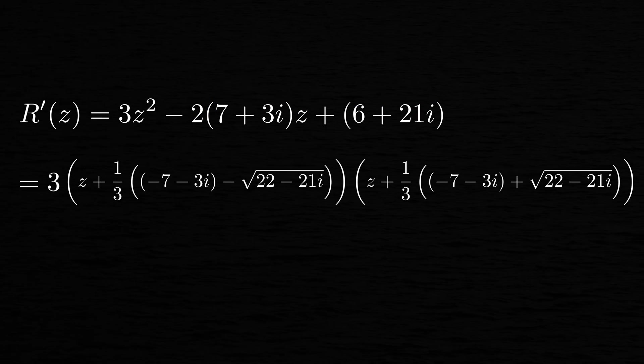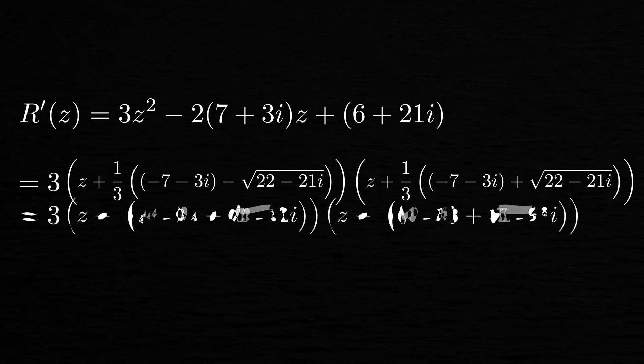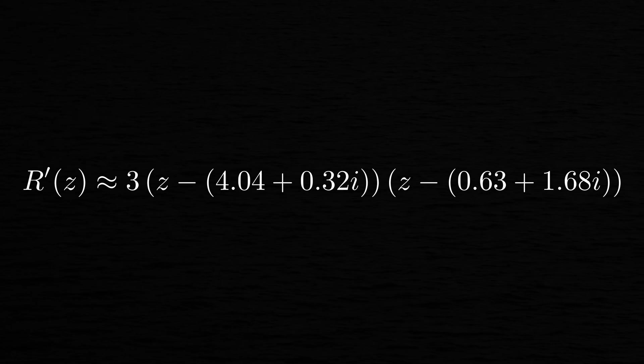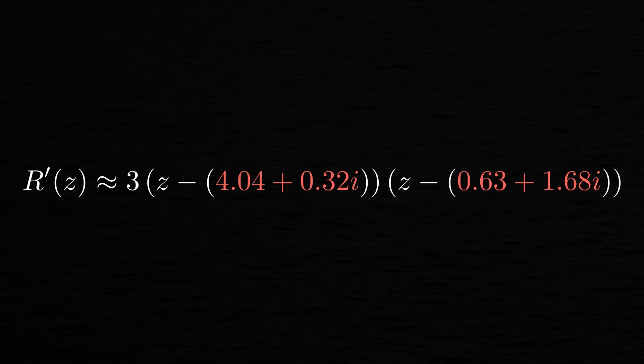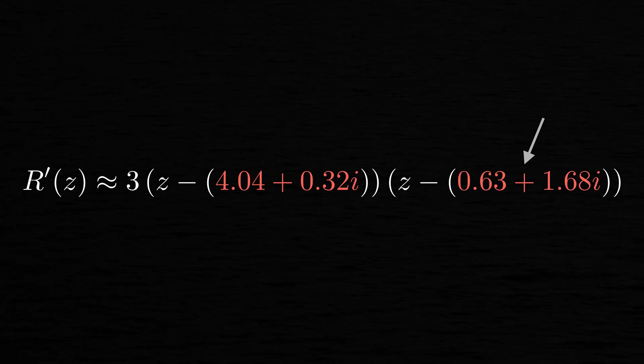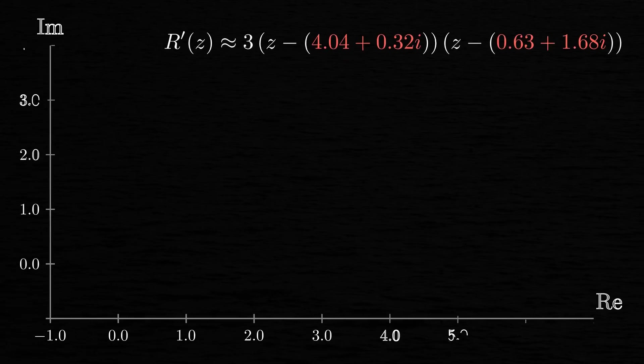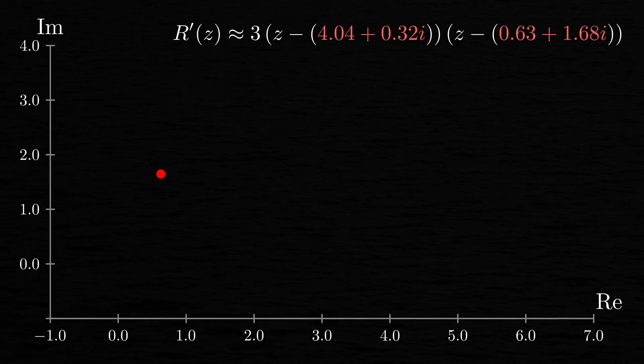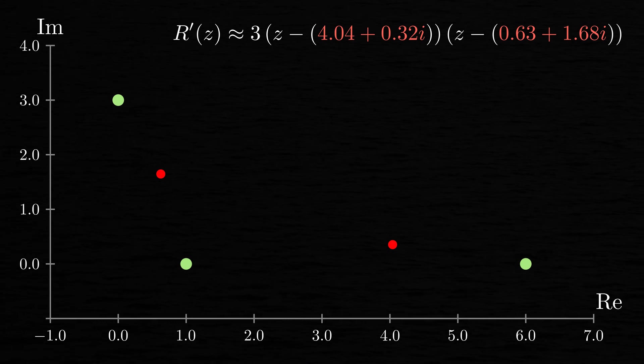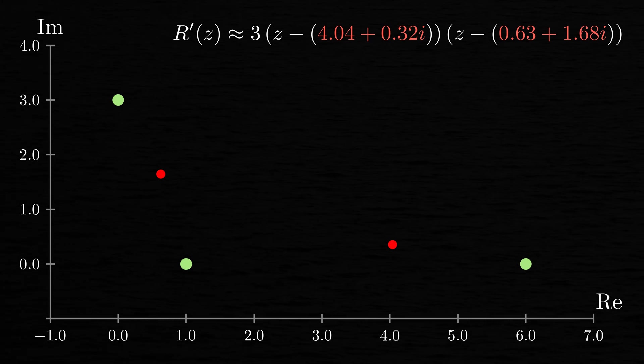This looks a bit messy, but we can evaluate this expression numerically to this polynomial here. So the derivative of r, that is r', has two zeros that lie approximately at 4.04 plus 0.32i and 0.63 plus 1.68i. If we go back to the complex plane, we can draw these two zeros in red, along with the three zeros of r from previously.